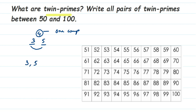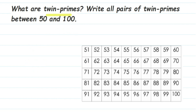Consecutive means one after the other: after three the next prime is five, and after five the next prime is seven. So three and five are twin primes, and five and seven are also twin primes because there is exactly one composite number between them. Now, the question asks us to write down the twin primes between 50 and 100.